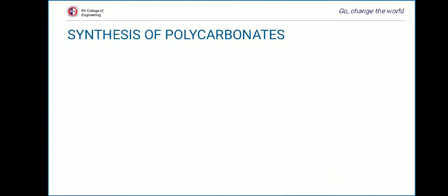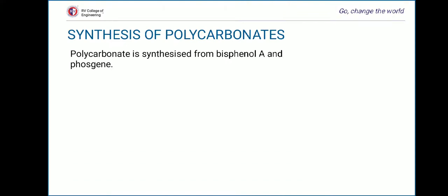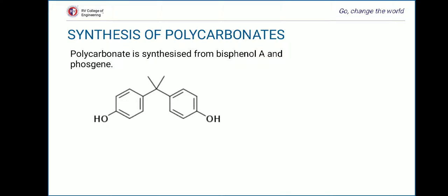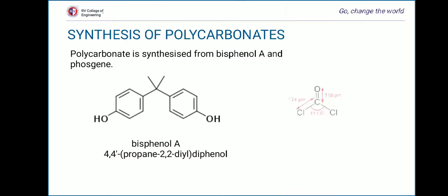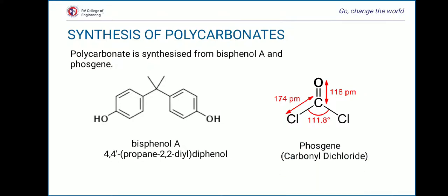Moving on to the next slide, we can learn about the synthesis of polycarbonates. Polycarbonate is synthesized from bisphenol A and phosgene. The IUPAC name of bisphenol A is 4,4'-propane-2,2-diyl diphenol. Phosgene is also called carbonyl dichloride. In the structure of phosgene, the carbon-chloride bond length is 174 picometers and the carbon-oxygen bond length is 118 picometers.